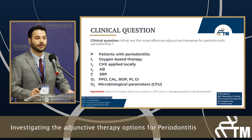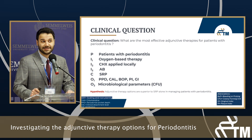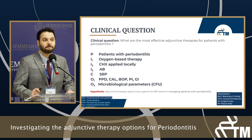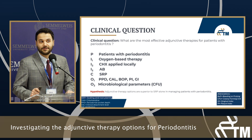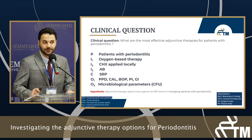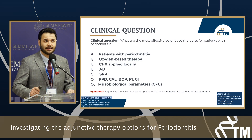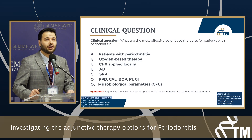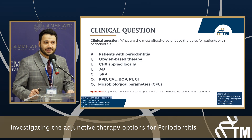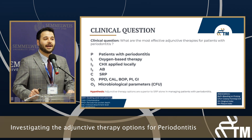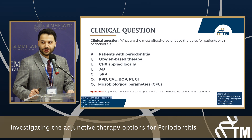In order to address this question, I use the PICO framework: what are the most effective adjunctive options for patients with periodontitis? My population is patients with periodontitis. My interventions are oxygen-based therapy compared with chlorhexidine and antibiotics. Our main outcomes are periodontal pocket depth reduction and clinical attachment level gain.